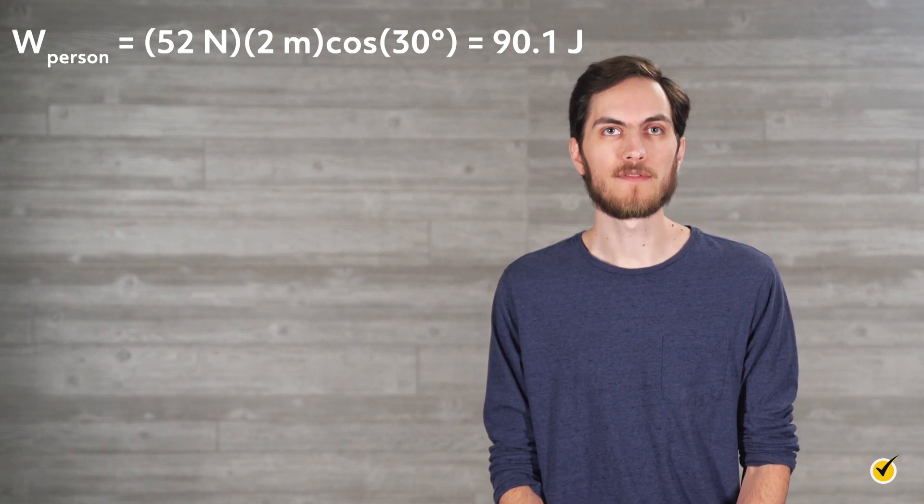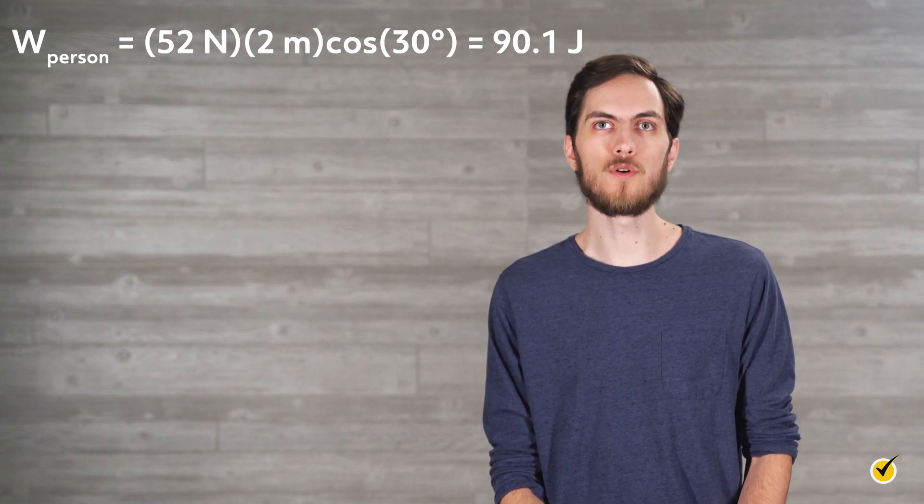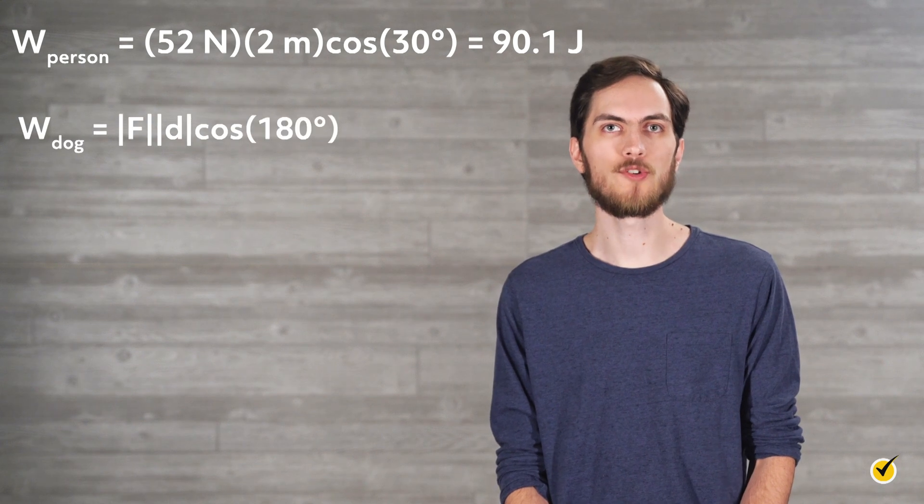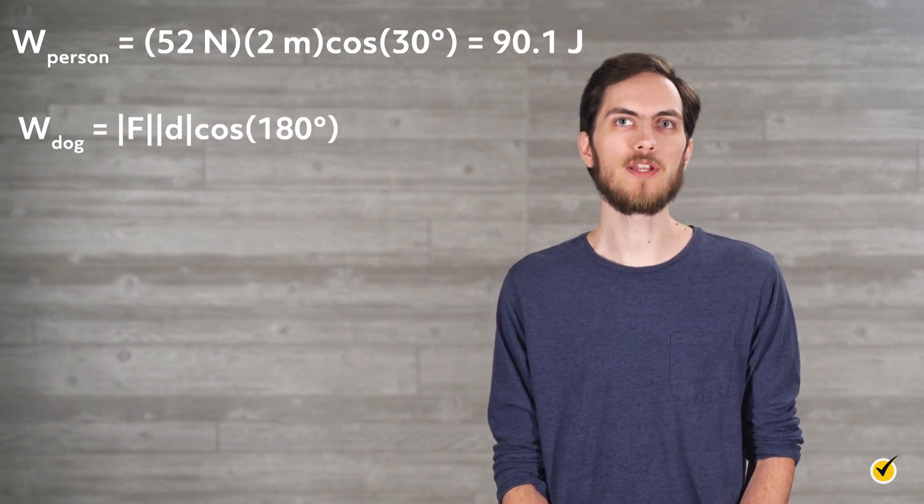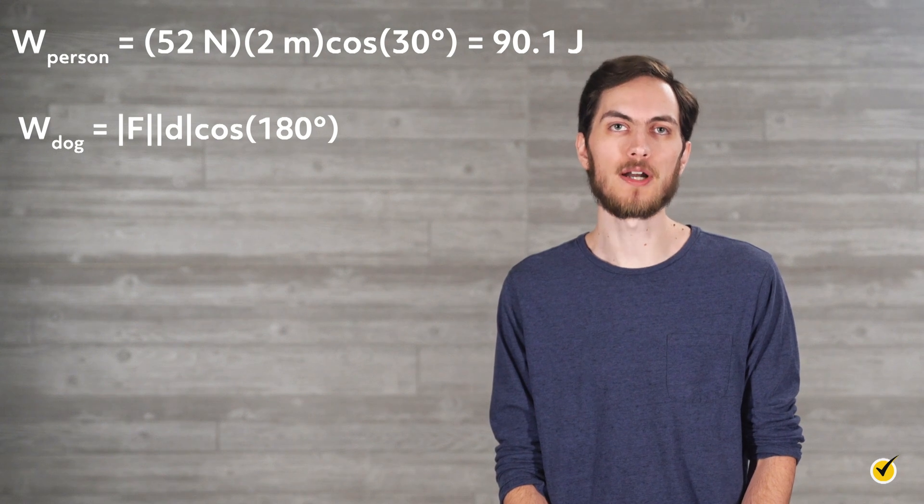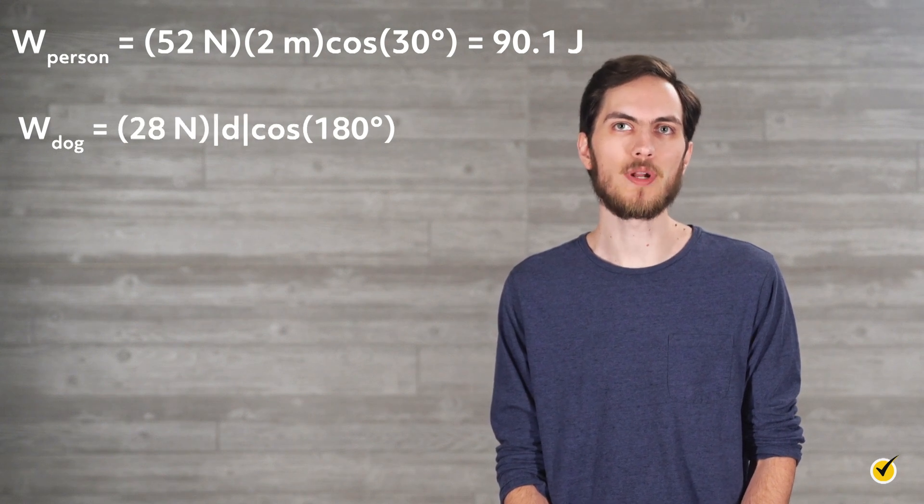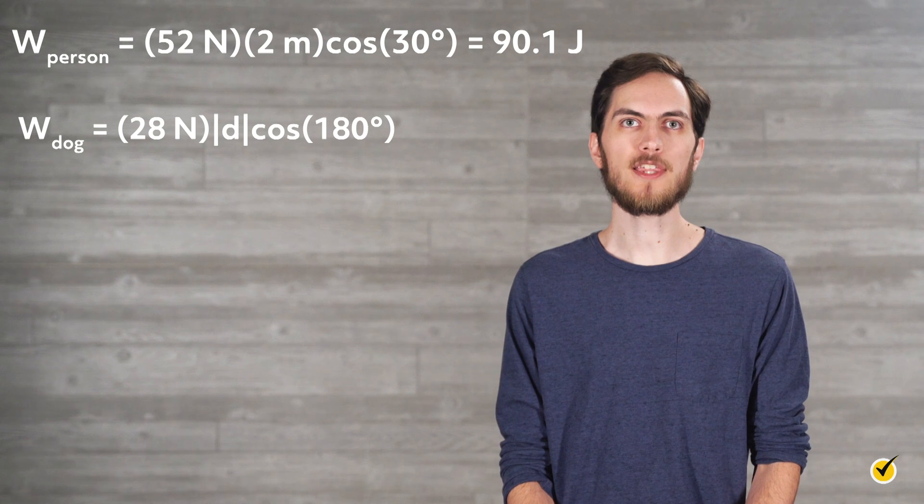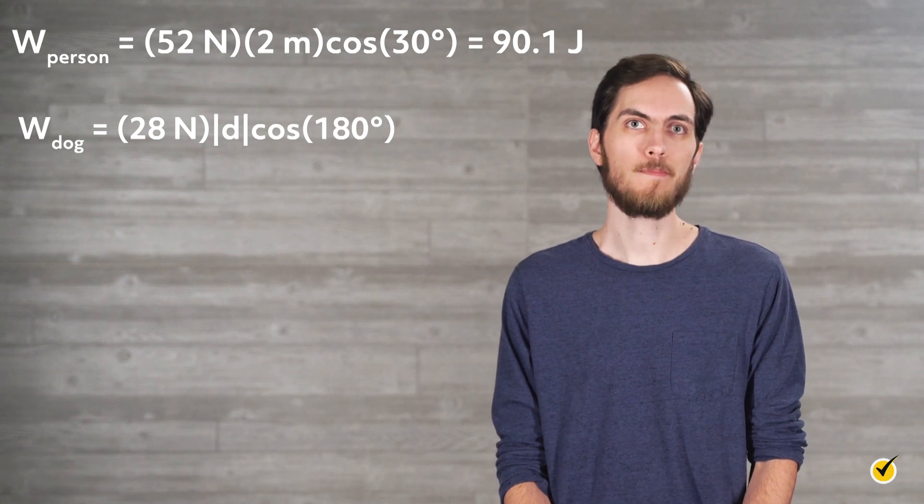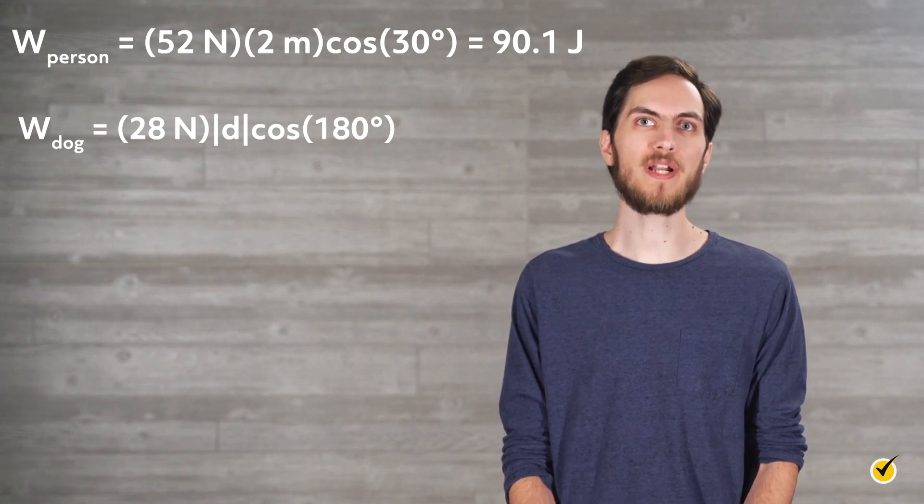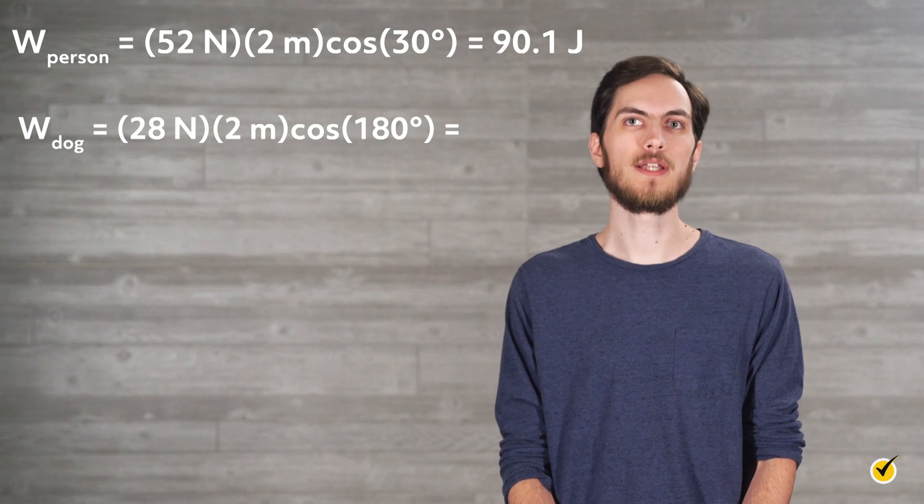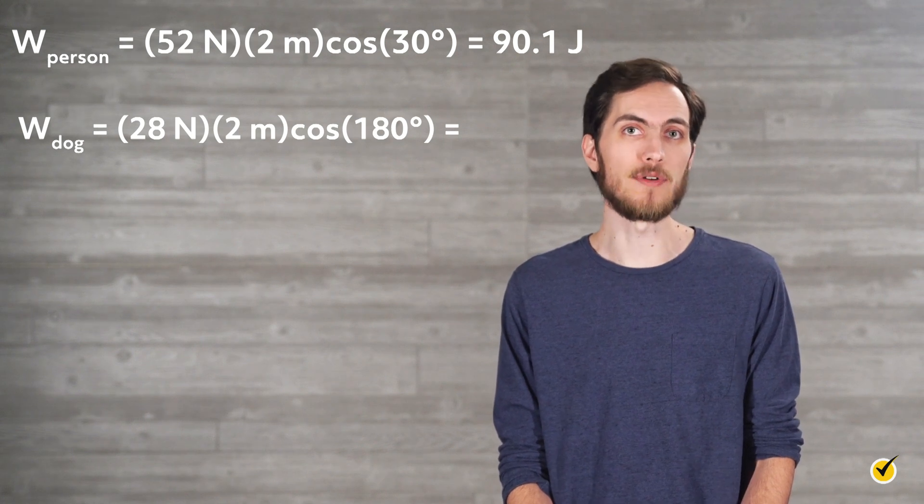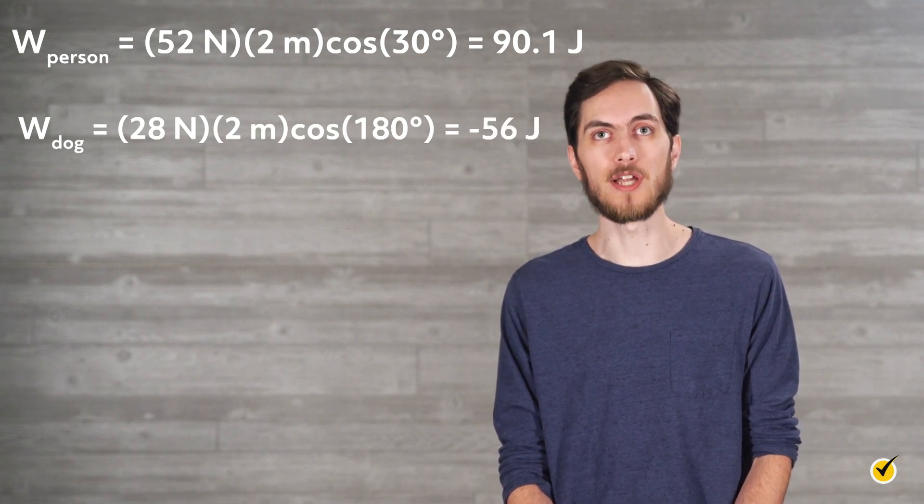Now let's figure out the negative work from the dog. We can use the full work equation with theta equals 180 degrees, or we can note that the force is in the opposite direction as the motion of the box and say that f equals negative 28 newtons. Either way, we'll get the same answer. So let's stick with our work equation, 28 newtons times 2 meters times the cosine of 180 degrees equals negative 56 joules.